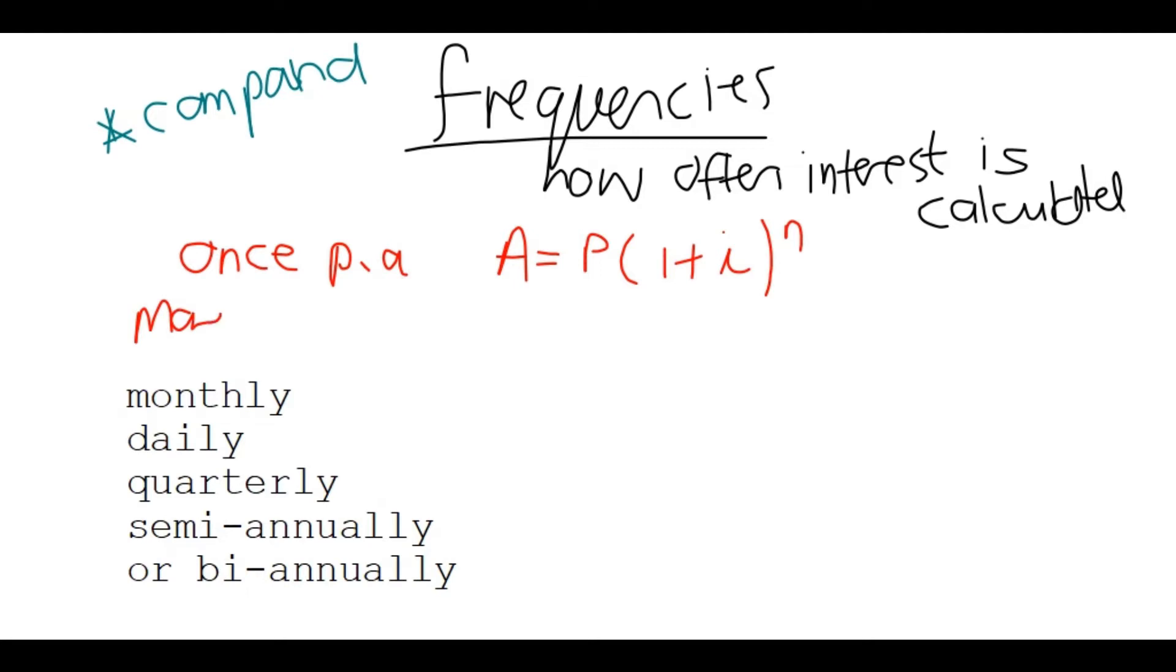if it's more than once per annum, so now your interest is calculated more often, and now it's going to be 1 plus I over or divided by F, your frequency, and to the power N. And now in this case, you must also note that this N is the number of times that you are going to be calculating interest. So if they say maybe for 5 years, your interest is compounded for 5 years, and it's maybe monthly, let's say monthly.